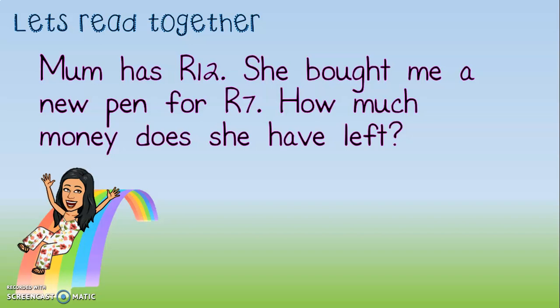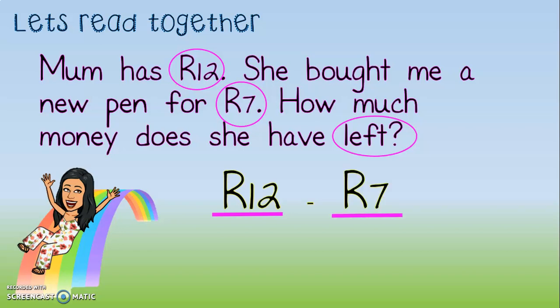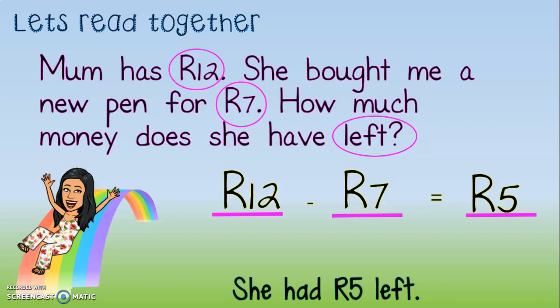Okay, we're back. Step 1: circle your two numbers that are part of your sum — that would be 12 rand and 7 rand. Which word tells us whether it's a plus or minus? That's right, 'left' tells us that it's a minus sum. So check your work. The sum is 12 rand minus 7 rand equals. The answer is 5 rand. The final step is our written answer: she had 5 rand left. We answered the question — how much money does she have left? She had 5 rand left.